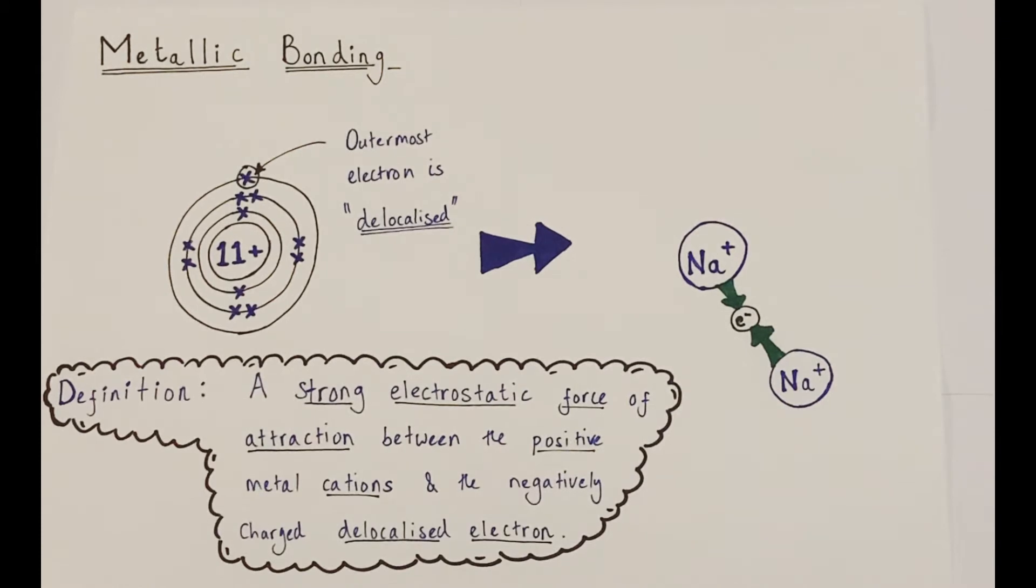In effect, each atom within our sodium structure will have lost control of its outermost electron. It will be able to move its outermost electron from its outermost shell to the outermost shell of a neighboring atom. We say that this electron has become delocalized, leaving the sodium atom effectively as if it were a sodium 1 plus cation as a result.